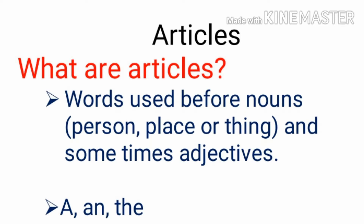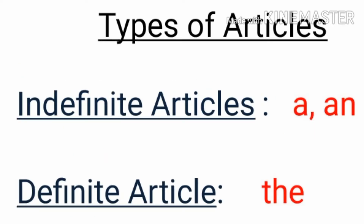What are articles? Articles are the words used before nouns. You remember nouns? Name of a person, place or thing. So articles are used before nouns and sometimes before adjectives also. Articles are a and the. Articles can be divided into two parts: indefinite articles a and an, and definite article the.